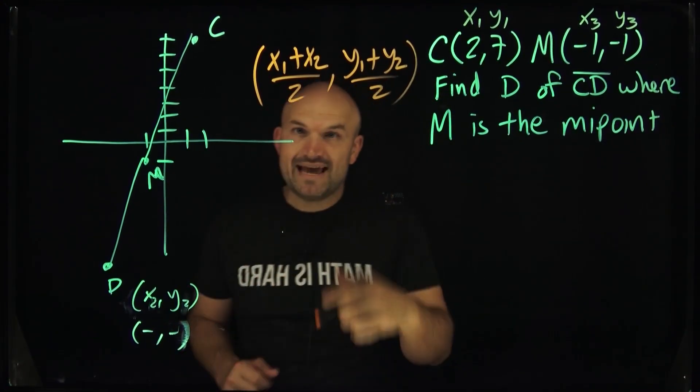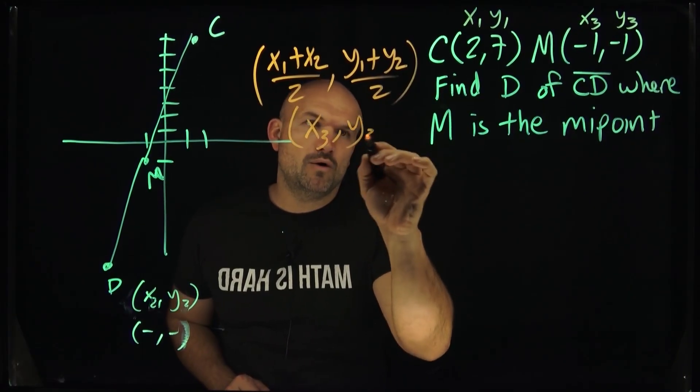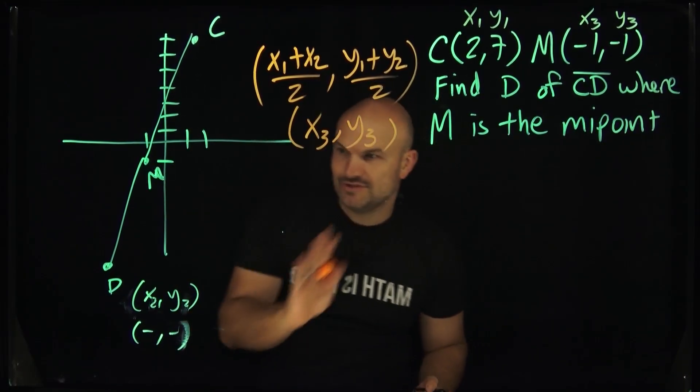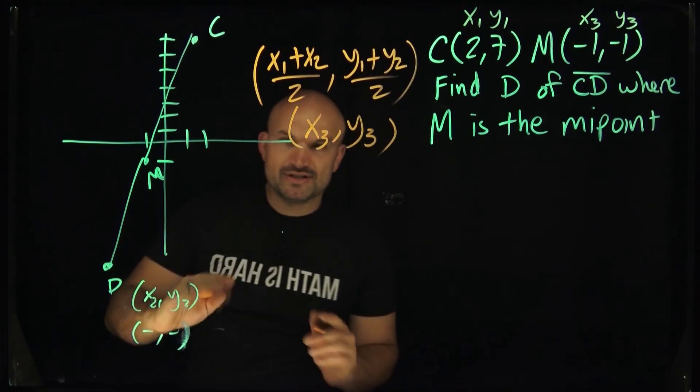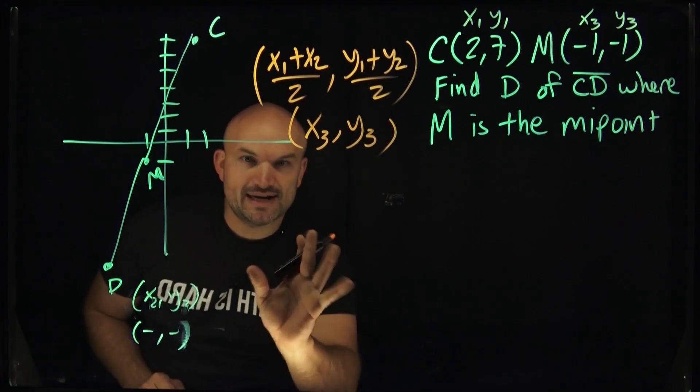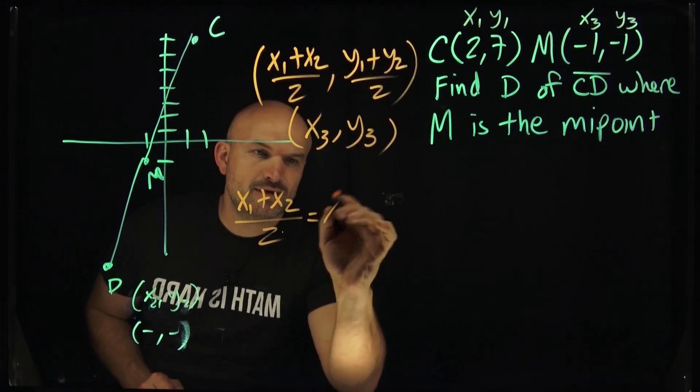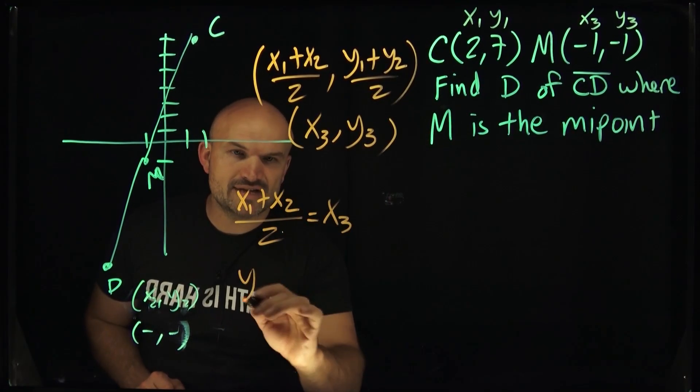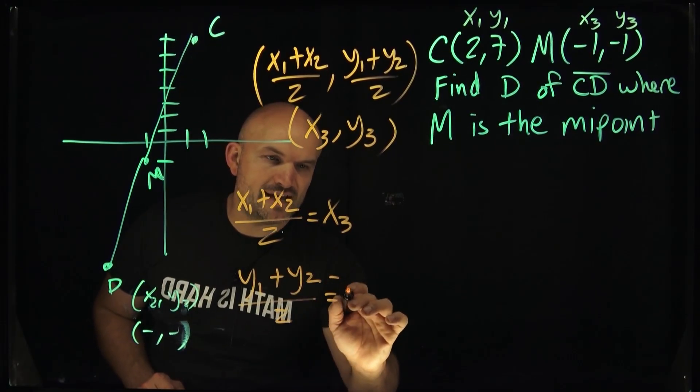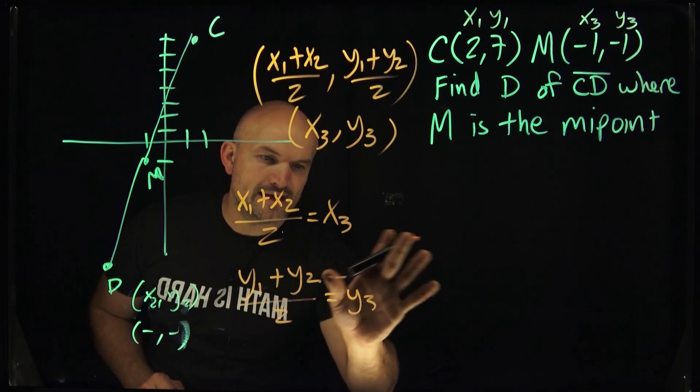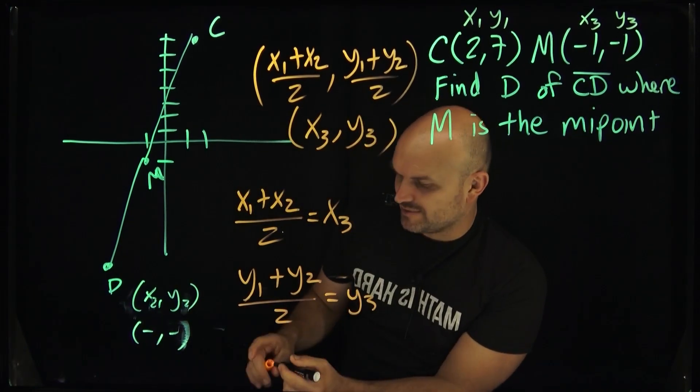Now, again, what those gave us was our midpoint, which I'm going to call X3 comma Y3. Now, why would I call them that? Why would I do that? Well, the reason why I would do that, guys, is because I want you to understand this. If we were to kind of write an equation here, I can say X1 plus X2 divided by 2 equals an X3. I can also say Y1 plus a Y2 divided by 2 gives us a Y3. All right, so now we need to understand, well, what is the information that we have and what is the information that we don't have?